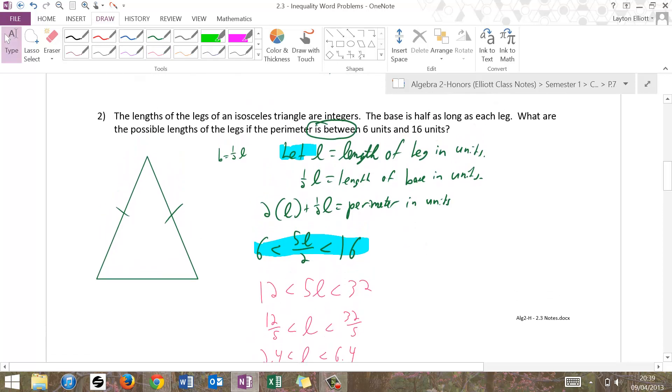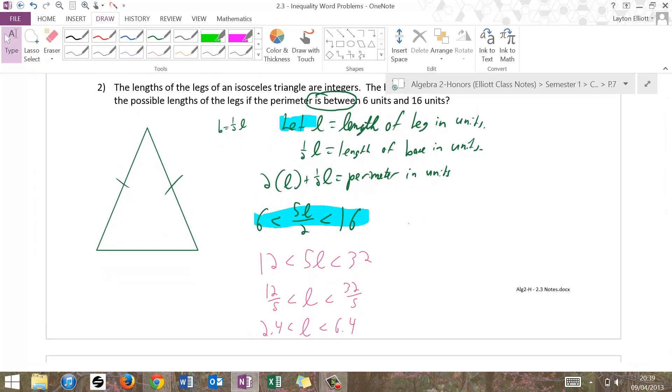And the question says, what are the possible lengths of the legs? So I say the legs are between, using that same between word. I could say between 2.5 and 6.4, but I'm going to have to scratch that out, because I just failed to notice one little thing up here. If I reread the problem just one more time to make sure I have the answer, I see this word here. The lengths are integers. So the integers between 2.4 and 6.4, I say the legs are 3, 4, 5, or 6 units. There's my final.